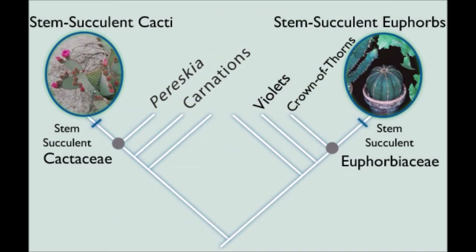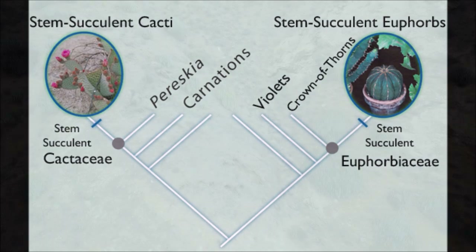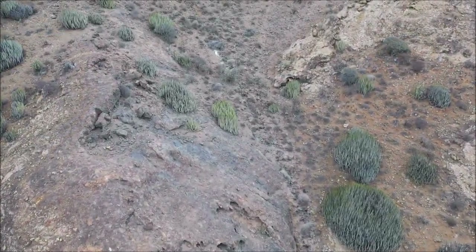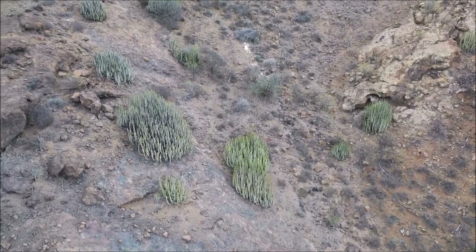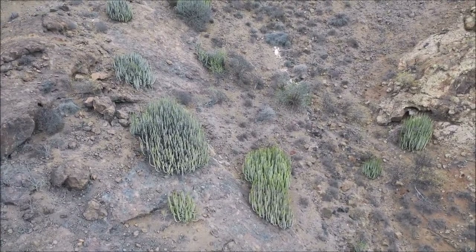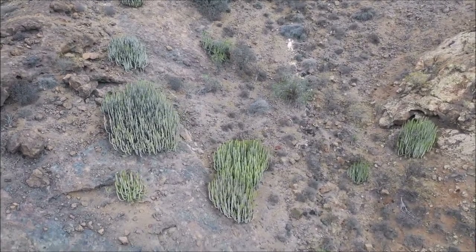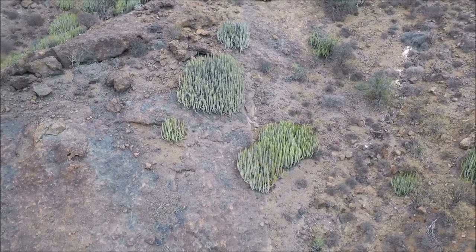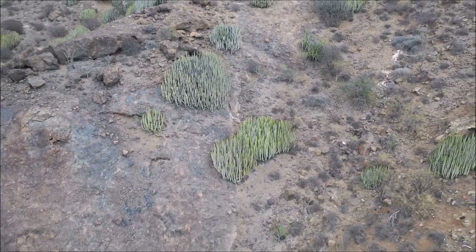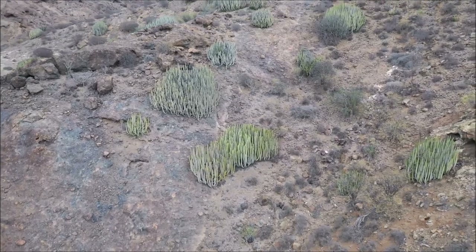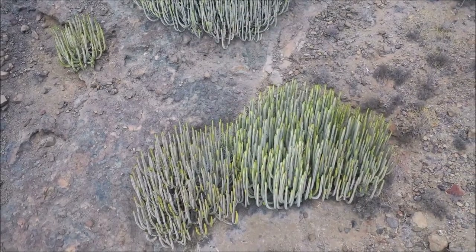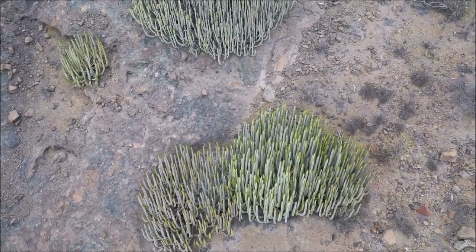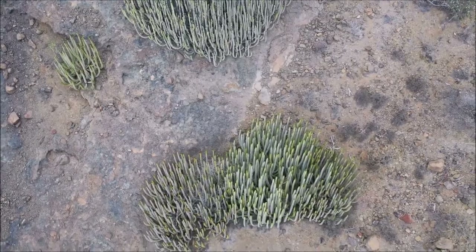Even though these two plants are in the same genus, they couldn't look more different. Cacti and Euphorbias, on the other hand, are separate genera, and even though they look very similar, they are in reality very distantly related to one another. They have been shaped independently of their genetics by the similar environments they inhabit — for example, both have evolved to eliminate external leaves, reducing the surface area from which bodily water can be lost through transpiration, and can perform photosynthesis in their columnar stem, which is ridged to shield the plant from the dry desert air.